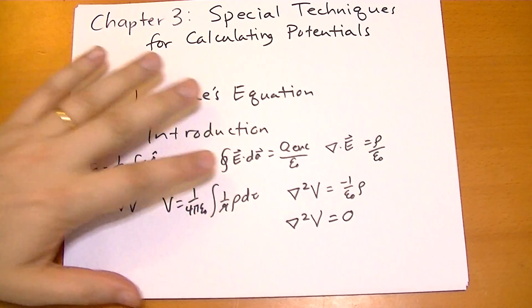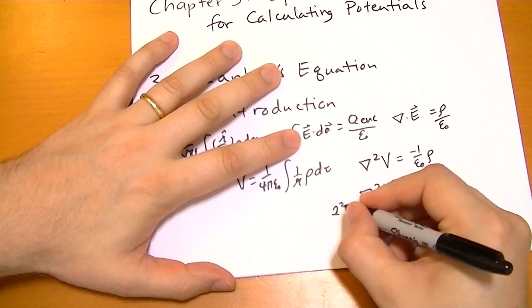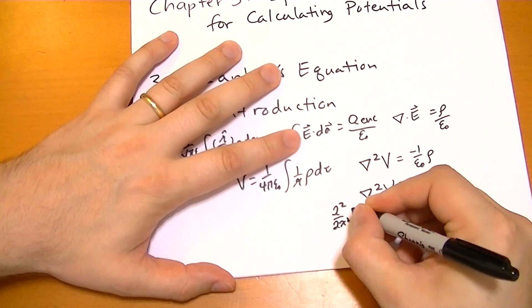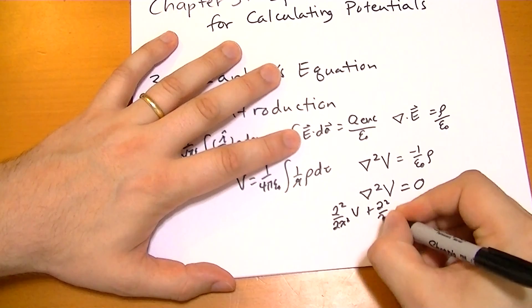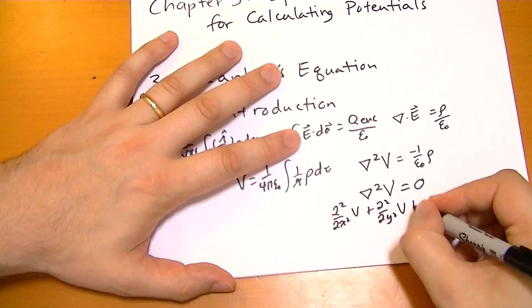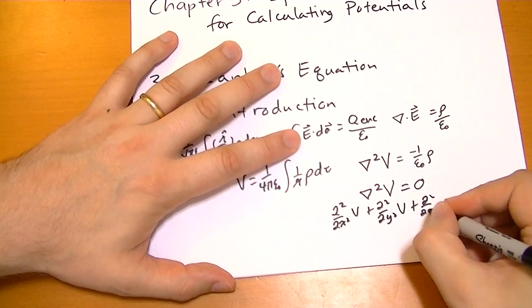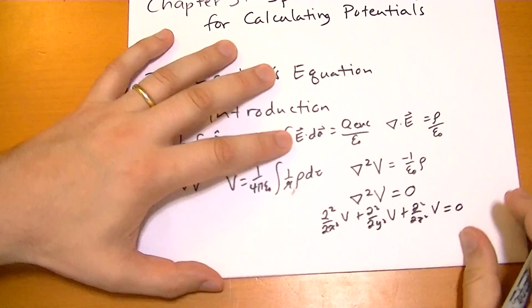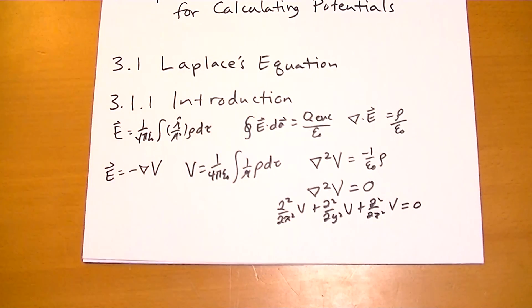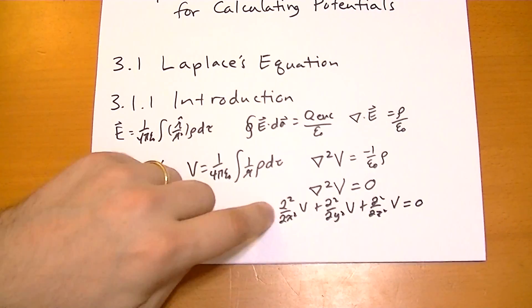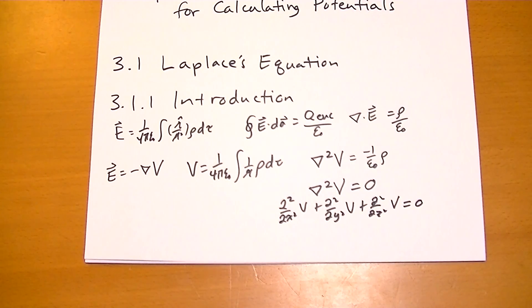Writing this out in full form, we have d squared by dx squared of V, plus d squared by dy squared of V, plus d squared by dz squared of V equals zero. And if you've taken a class on partial differential equations, you should recognize this. Solutions for this differential equation are called harmonic functions.